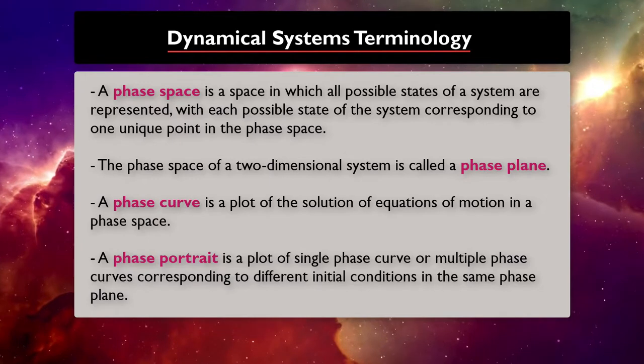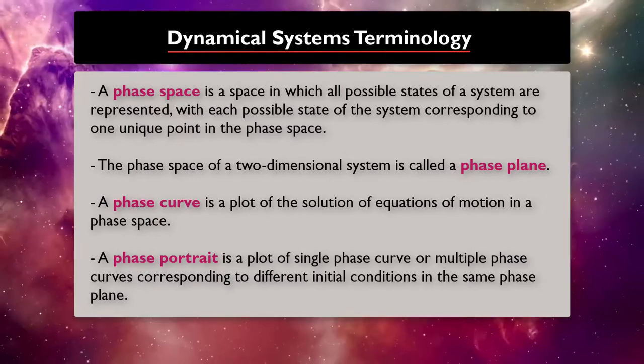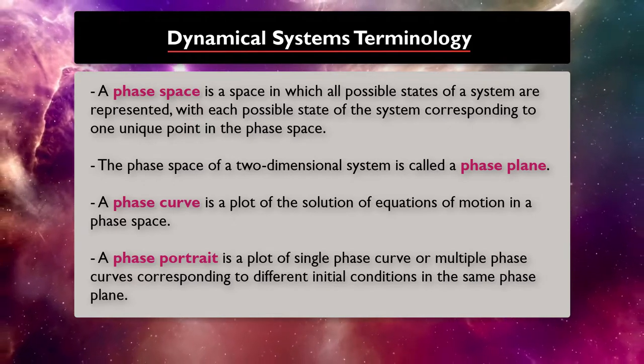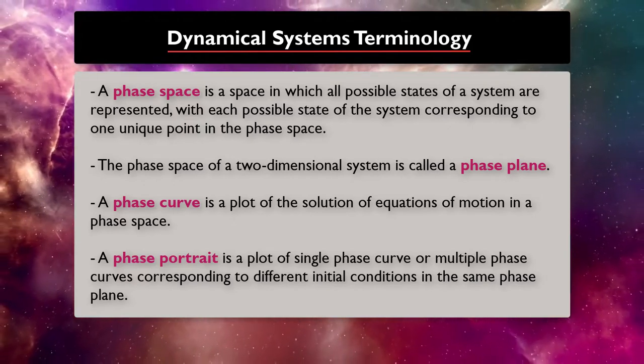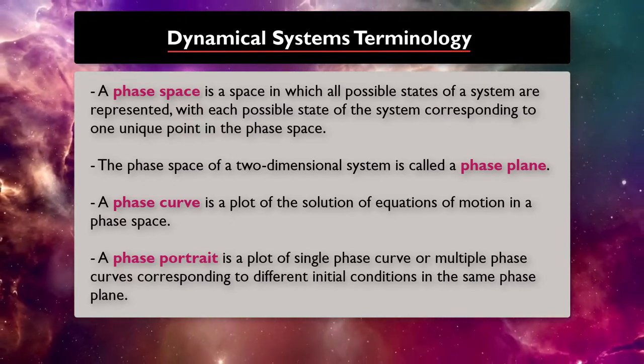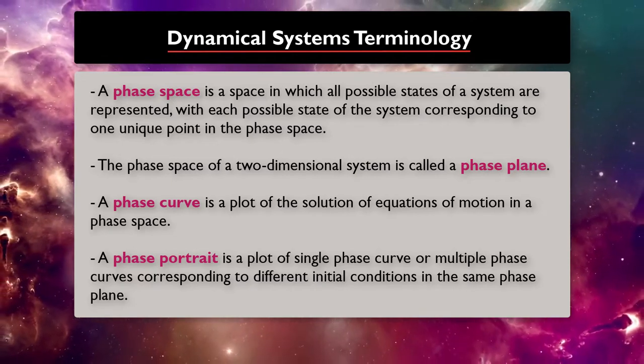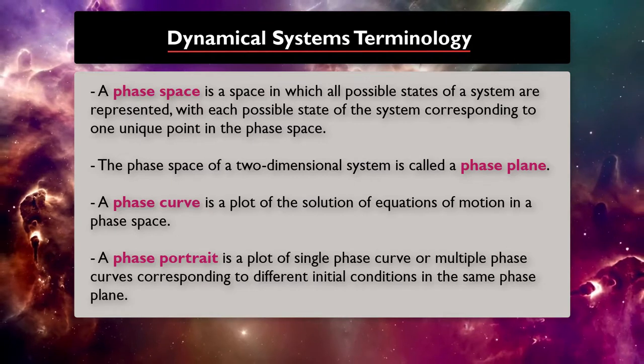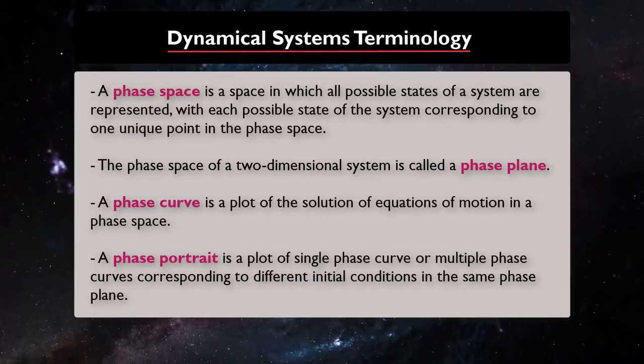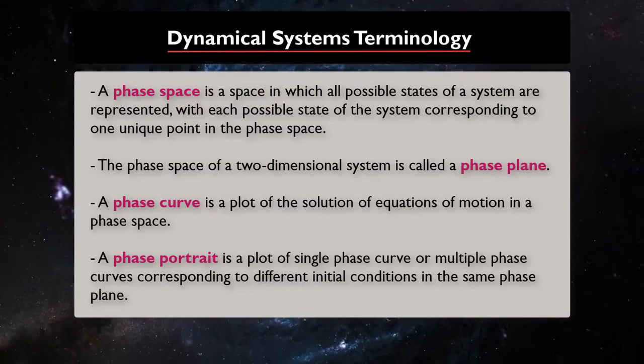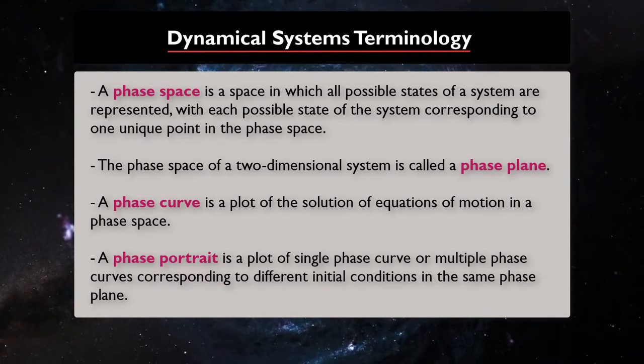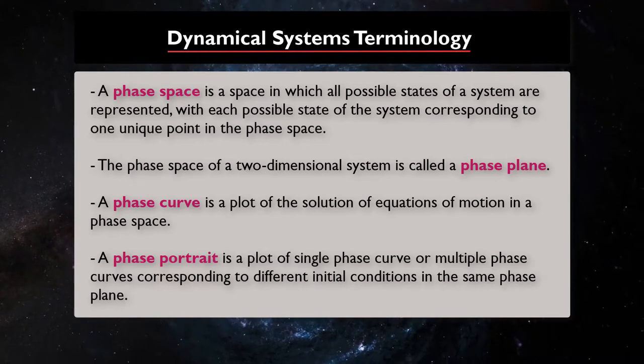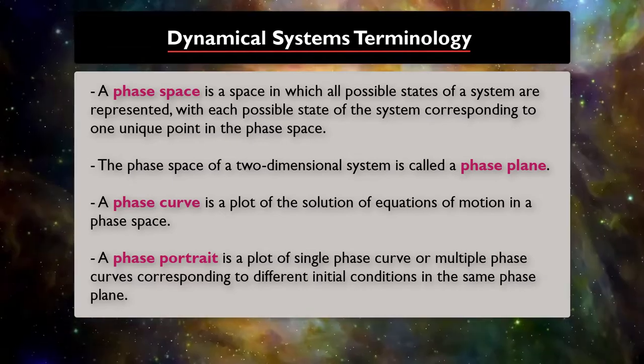As we learned in previous lecture, at any given time, a dynamical system has a state given by a vector that can be represented as a point in a geometrical manifold. What future states follow from the current state is described by the evolution rule of a dynamical system. We also define the set of all states of a system of ordinary differential equations as phase space. Now, if we plot the solution of equation of motion in a phase space, then we have a phase curve.